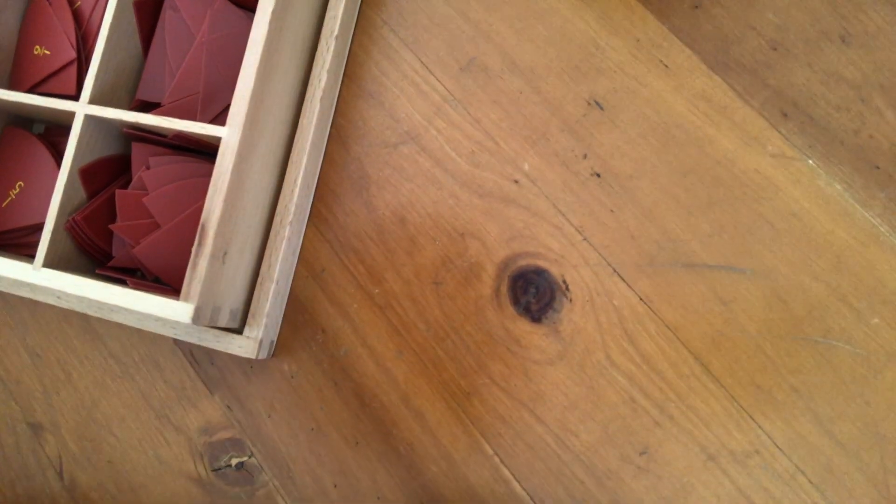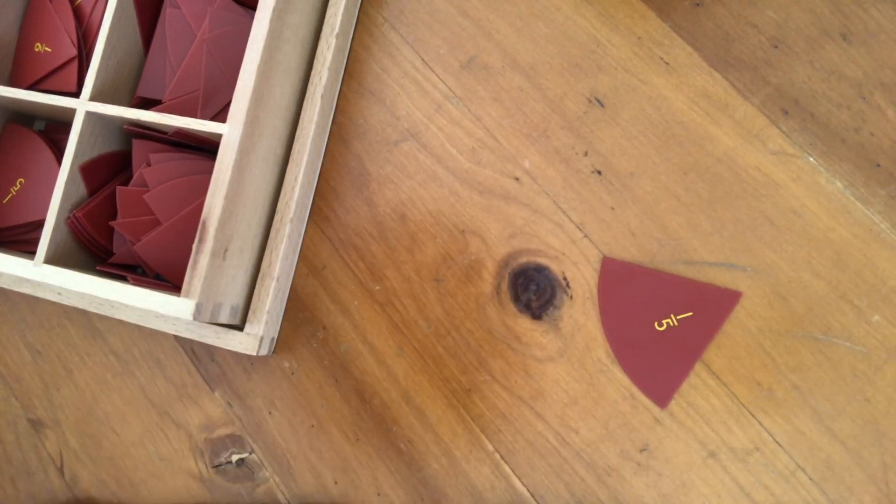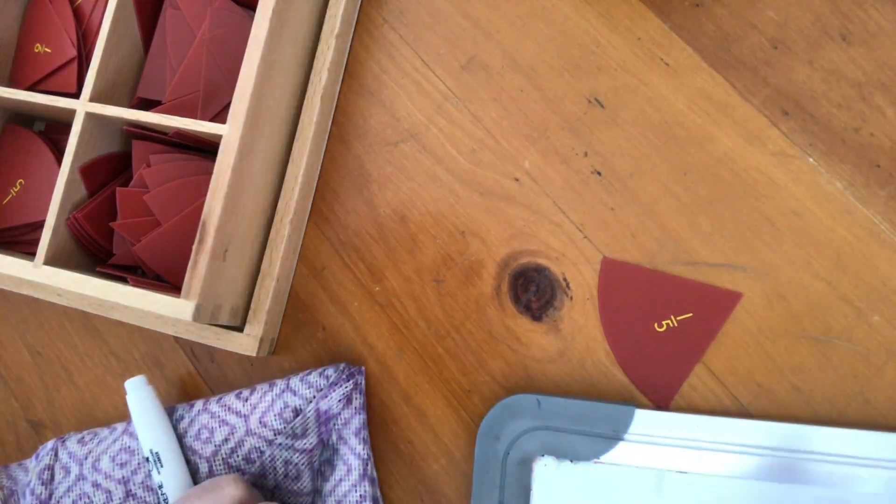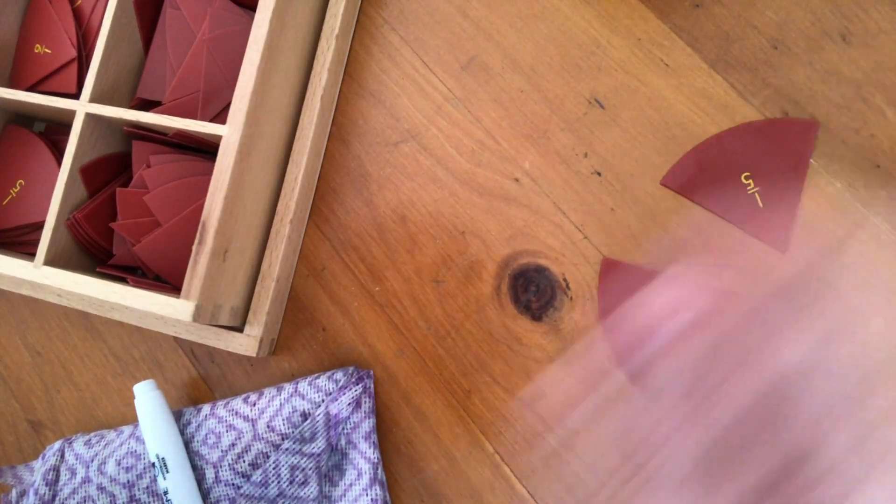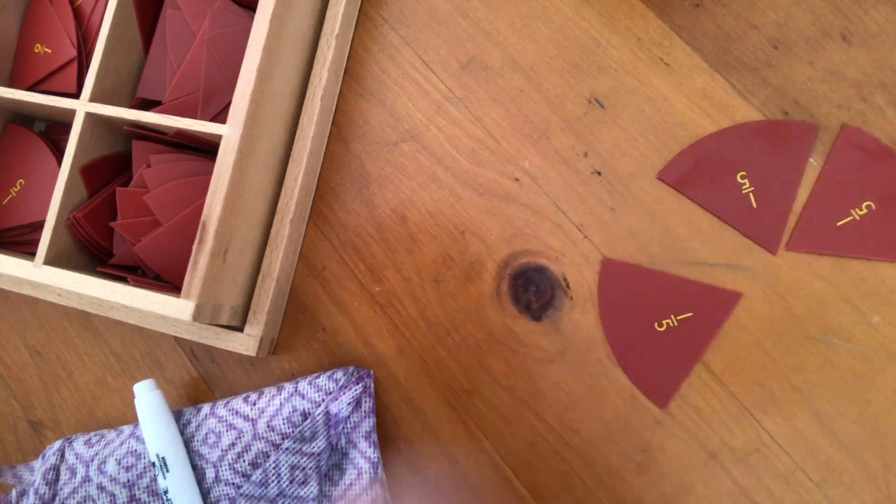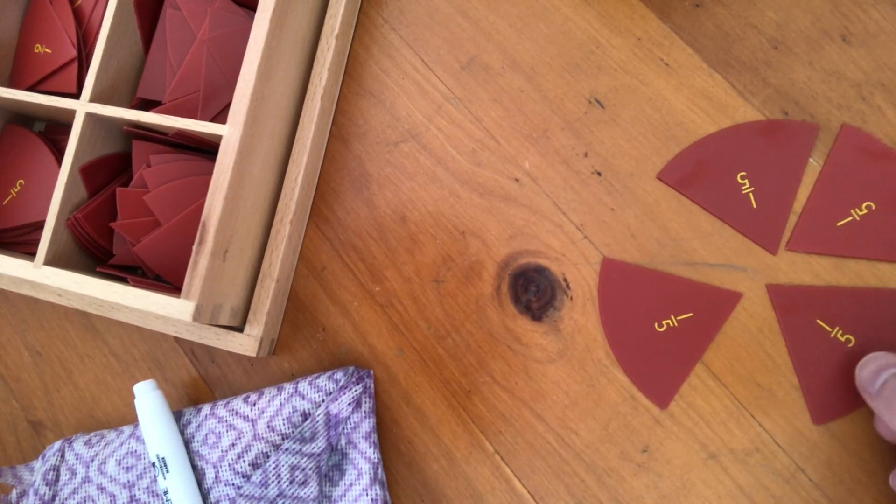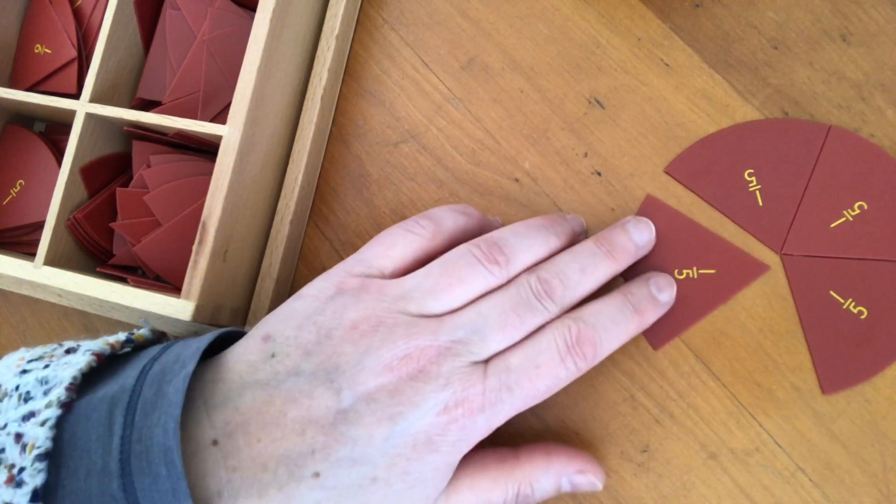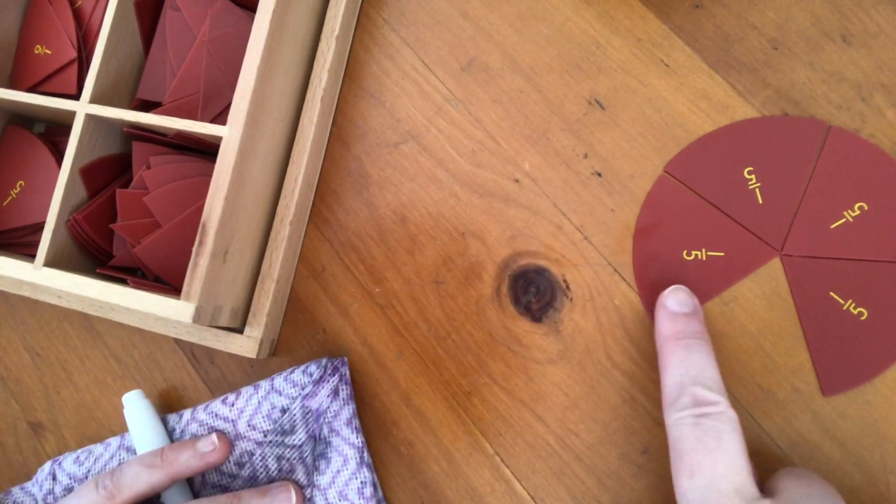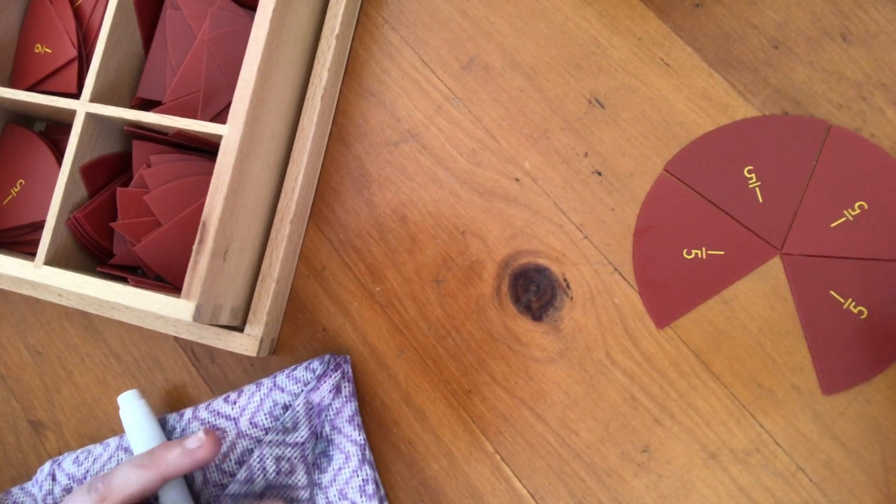Okay so first thing I'm doing is taking out 1/5 and I'm adding to that 1/5 another 3/5. 1, 2, 3. So now I have 1, 2, 3, 4/5.